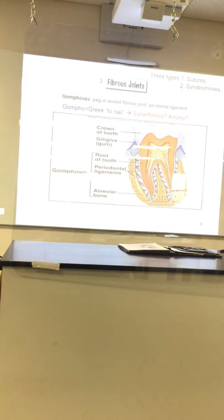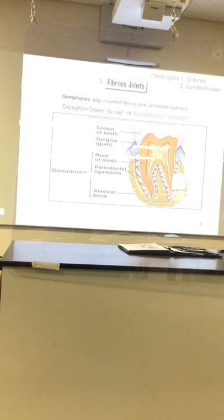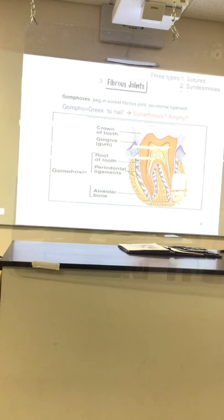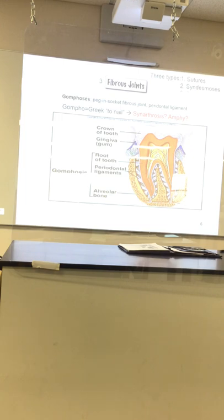Last but not least — gomphosis. Gomphosis means 'to nail' in Greek; it's supposed to look like a hole in wood with a nail in it. This is the area where the teeth connect to the jaw. Your teeth are held to your jaw with periodontal ligaments. Have you ever had a tooth pulled? That cracking, snappy sound is the ligaments of the teeth breaking as the tooth is yanked out.